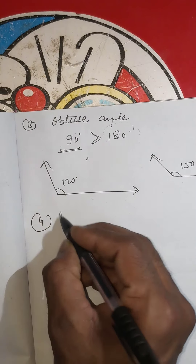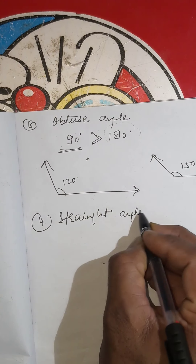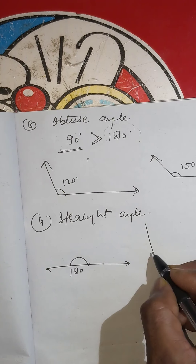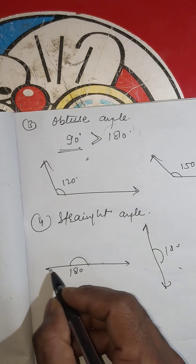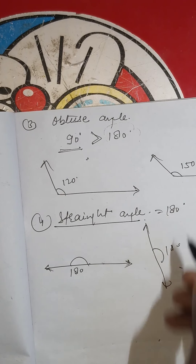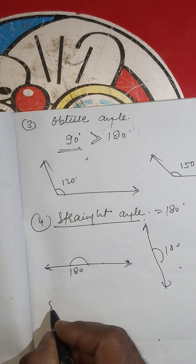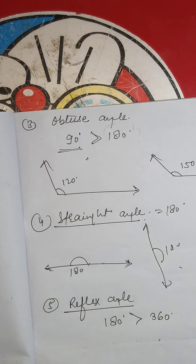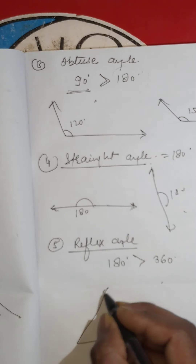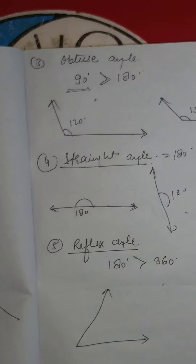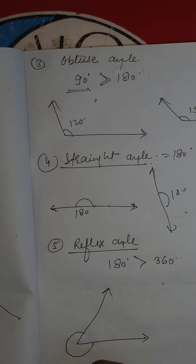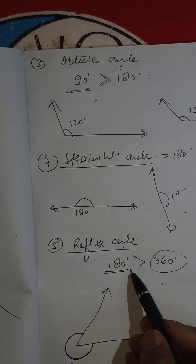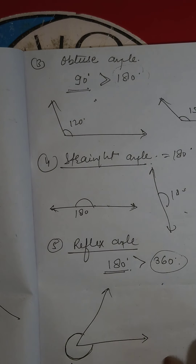The fourth type is the straight angle — an angle whose measure is equal to 180 degrees. The fifth is the reflex angle — angles whose measure is greater than 180 degrees but less than 360 degrees. For example, an angle of 310 degrees is a reflex angle.